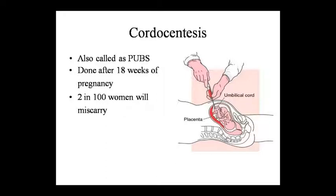The third technique is chordocentesis, also called PUBS (Percutaneous Umbilical Blood Sampling). This is done after the 18th week of pregnancy. PUBS stands for Umbilical Vein Sampling, in which fetal blood can be tested. It also facilitates intrauterine blood transfusion and enables drugs to be injected directly into the baby if necessary.